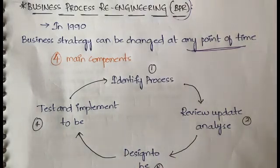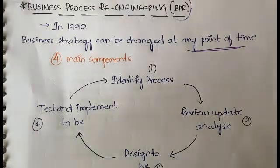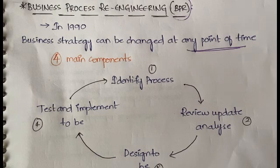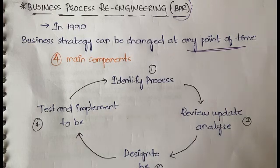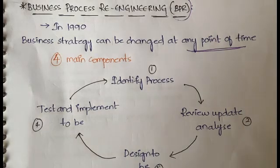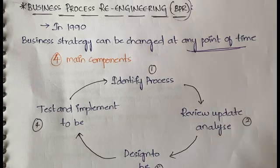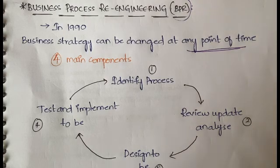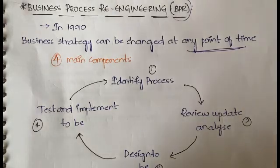For example, you have started the business and the strategy was decided by you, your shareholders, investors, and board of directors. After a few days that strategy did not work for the product you're manufacturing. Business process re-engineering will help you change the strategy in the middle of the business — even after it has already started.